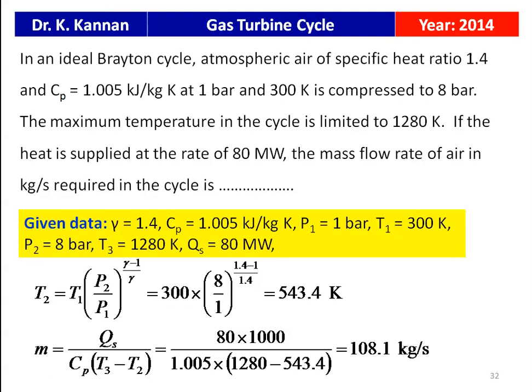The heat supplied equals M × Cp × (T3 − T2). So the mass flow rate M = heat supplied / (Cp × (T3 − T2)) = (80 × 1000) / (1.005 × (1280 − 543.4)) = 108.1 kg/s. The answer to the problem is 108.1 kilograms per second.